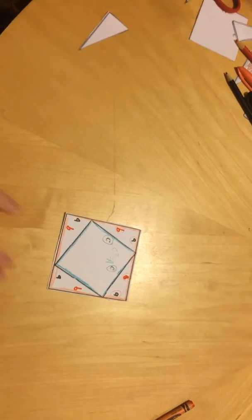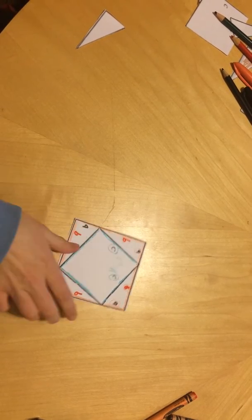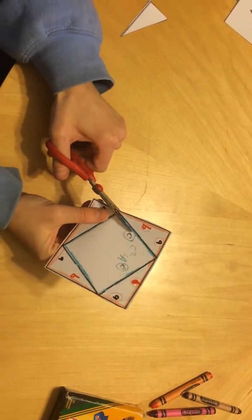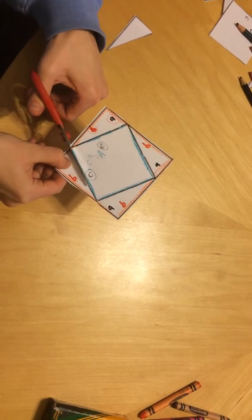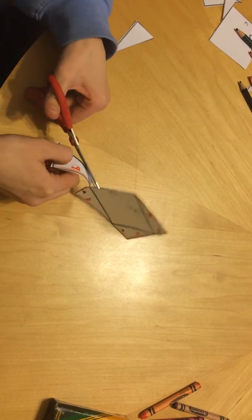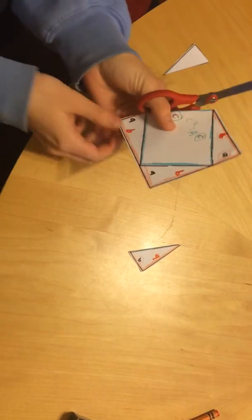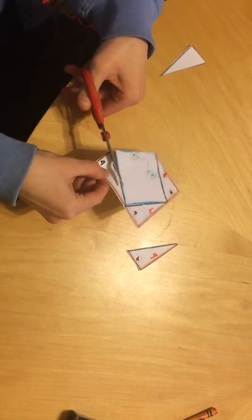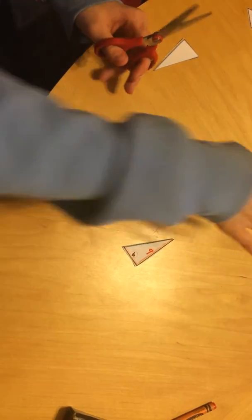After that, cut off two of the triangles from the outer square with scissors or a sharp utensil. It doesn't matter which triangles you cut off right now. Now you can just put this to the side.